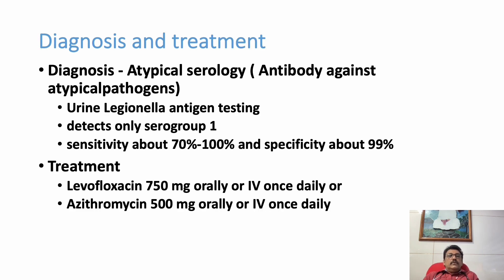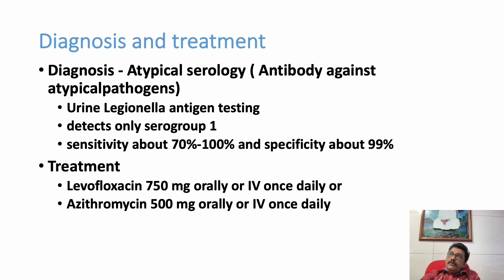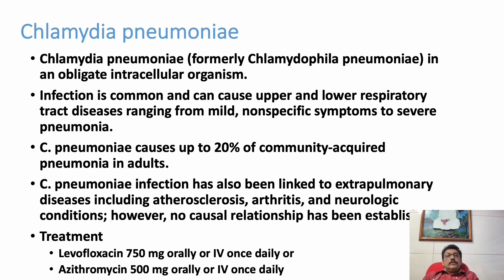Diagnosis is made using atypical serology or urine antigen testing for Legionella serogroup 1, with sensitivity of 70–100% and specificity of 99%. Treatment is the same: doxycycline 100 mg twice daily, azithromycin 500 mg oral or IV once daily, or levofloxacin 750 mg IV once daily — all given for at least 5 to 7 days.